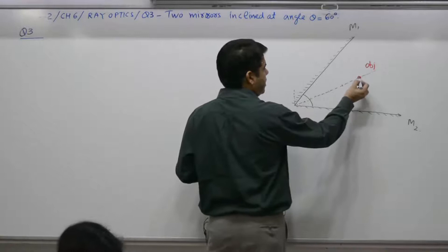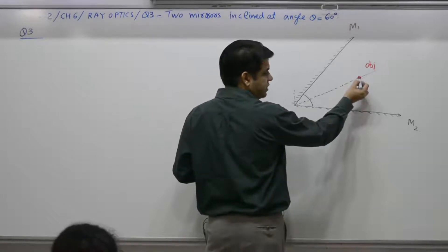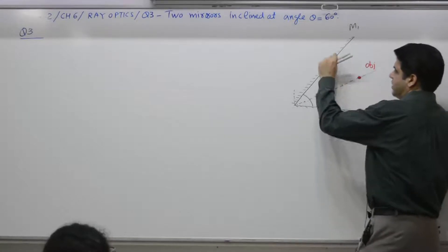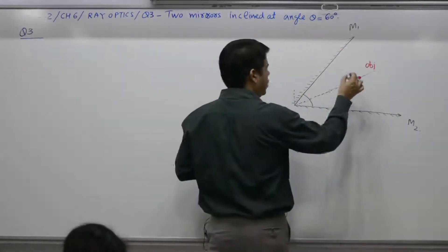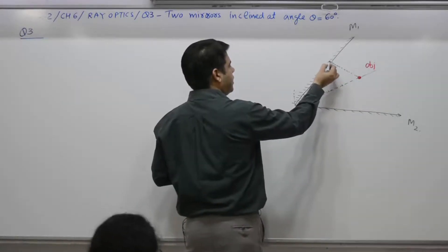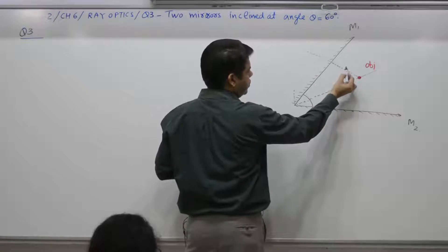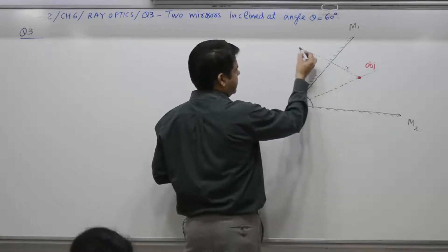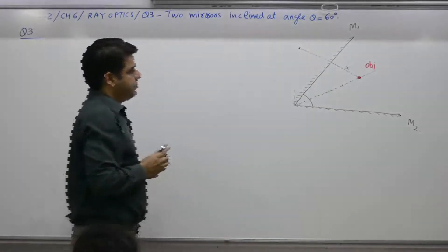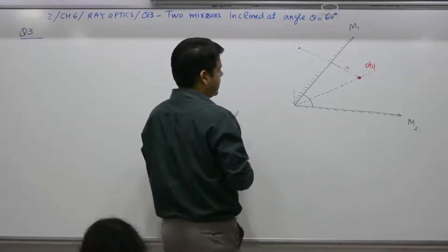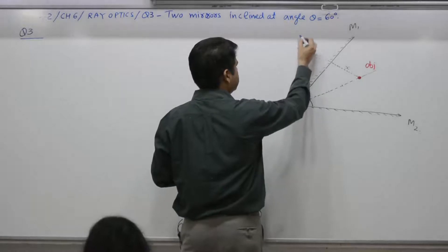Procedure: How do you draw image for this object? This is the mirror reflecting side. Yes, step one is what? To draw a perpendicular. And whatever this is equal to, say X, you need to move equal distance on the other side. That is, this be termed as first image, I1.